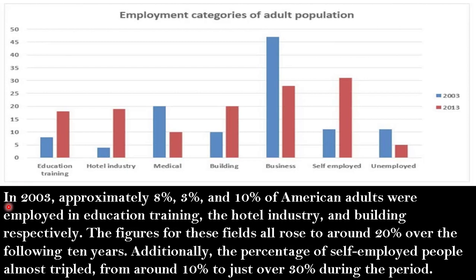Let's begin body paragraph 1. In 2003, approximately 8%, 3%, and 10% of American adults were employed in education training, the hotel industry, and building, respectively. The figures for these fields rose to around 20% over the following 10 years. Additionally, the percentage of self-employed people almost tripled from around 10% to just over 30% during the period.